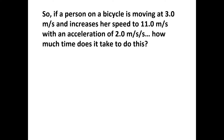Let's do a few exercises. If a person on a bicycle is moving at 3 meters per second and increases her speed to 11 meters per second with an acceleration of 2 meters per second every second, how much time does it take? Her initial velocity is 3 m/s and she's increasing by 2 m/s every second: after 1 second — 5 m/s; after 2 seconds — 7 m/s; after 3 seconds — 9 m/s; after 4 seconds — 11 m/s. So it takes 4 seconds.